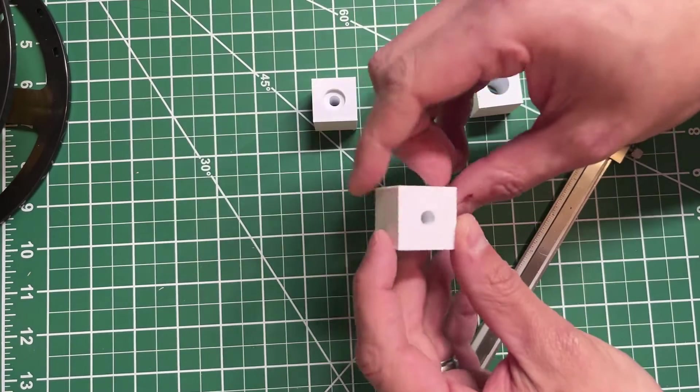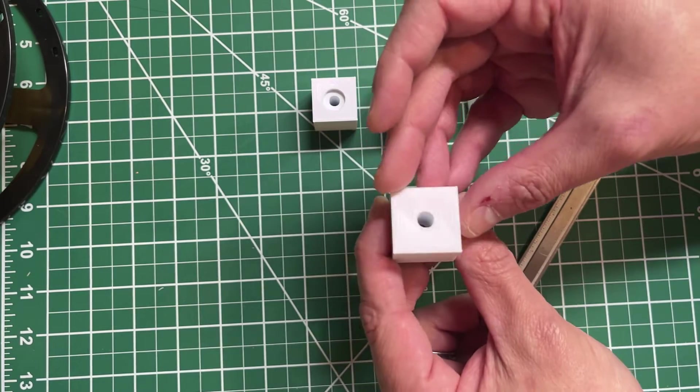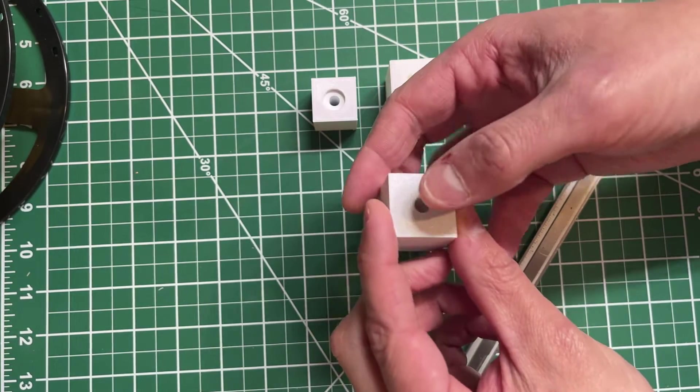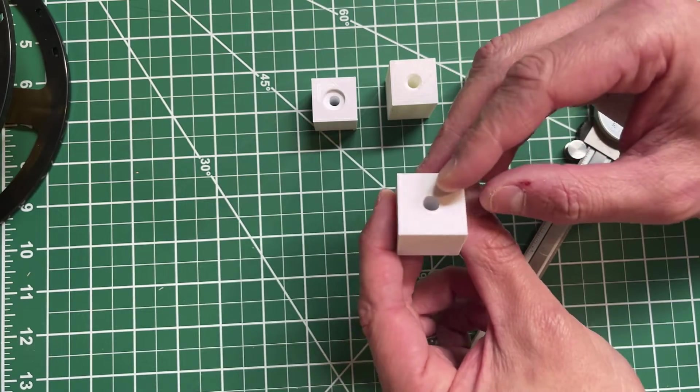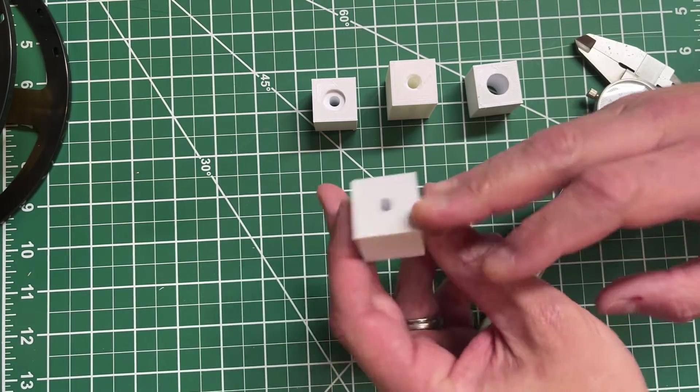One is what's called a through hole, where the hole literally goes through the entirety of the part. So we have a one-inch block here. You can see we have this hole, starts here, and goes all the way through to the other side. That's a through hole.